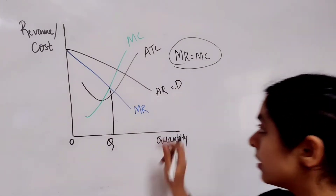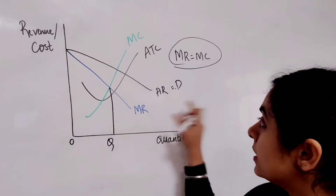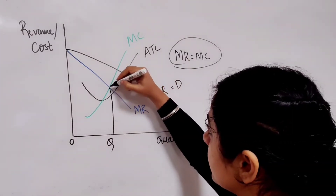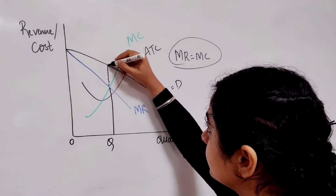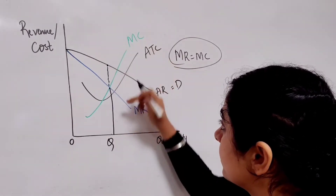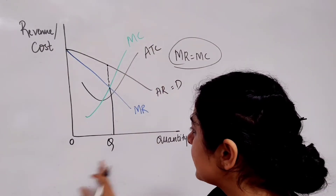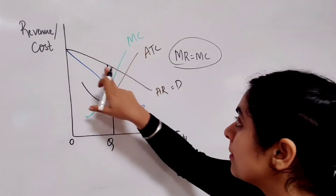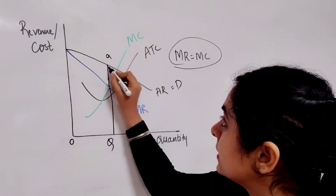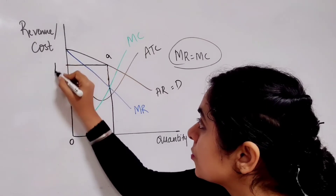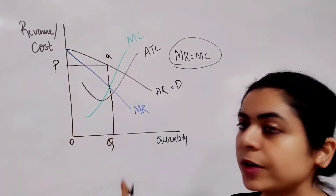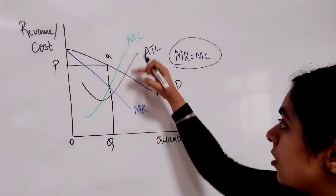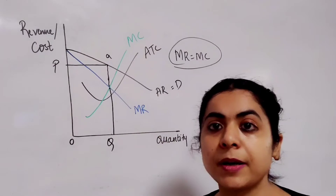But what about price? How will a firm decide the price to be charged? For that, the firm will take into consideration the demand curve. Average revenue is equal to the demand curve of the firm. So from the profit maximizing level of output, if we mark a point on the demand curve, we get our price. This is the price the monopolist is going to charge in order to maximize its profit, provided that its cost is less than its revenue.